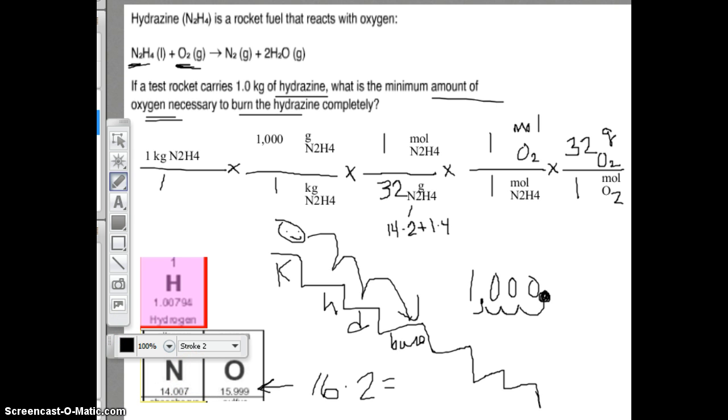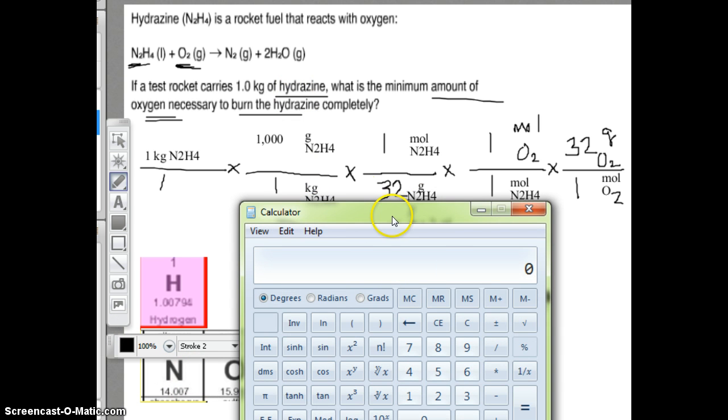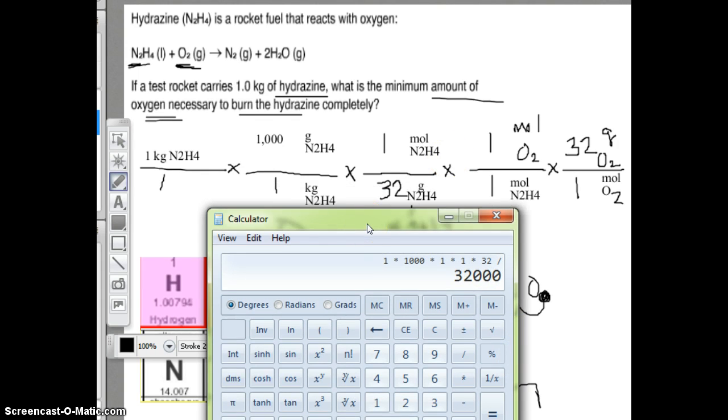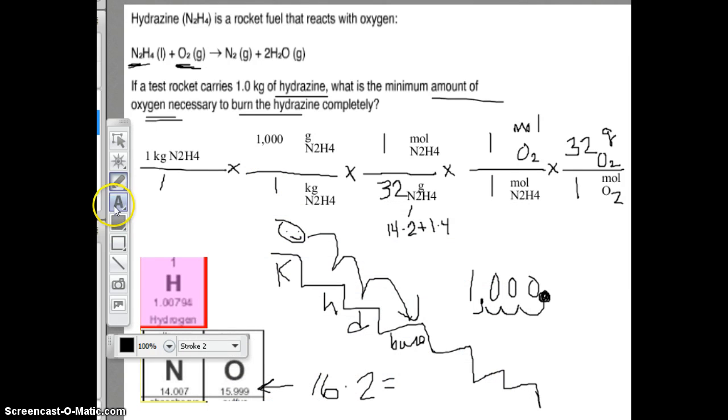Get out your calculator. I have 1 times 1,000 times 1 times 1 times 32 divided by 32. My answer is 1,000 grams of O2.